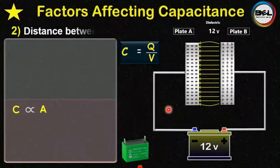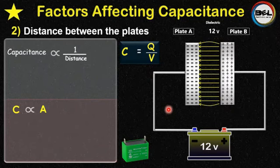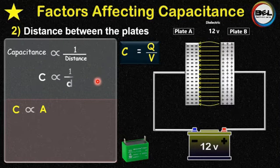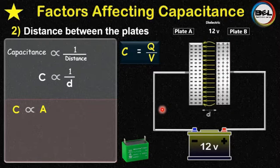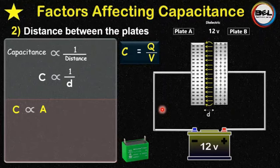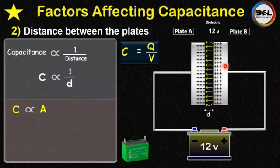Now let's see the second factor: the distance between the plates. The capacitance of a capacitor is inversely proportional to the distance, or C is equal to 1 over D. Whenever the distance between the plates decreases, the force of attraction between positive and negative charges increases, and the charge becomes concentrated on the inner side of the plate. As a result, the outer side of the plate becomes empty, giving less electrical pressure.